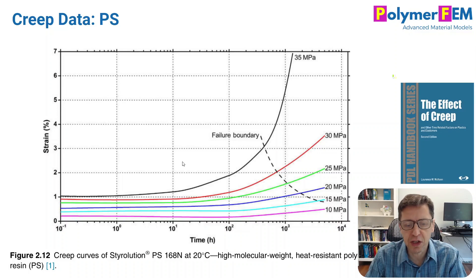Here's another interesting figure for the same polystyrene — the creep rupture curve showing how long it lasts at given stresses. What's notable here is that the material was exposed to different environments. The black curve is in air, and other curves represent environments like water or battery acid. The strength and lifetime clearly decrease in these environments. This is an important point: when discussing polymer failure, you must always specify the environment — temperature and other exposure conditions — because they can substantially influence strength and lifetime.